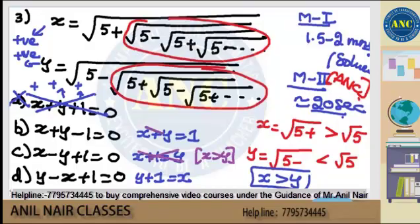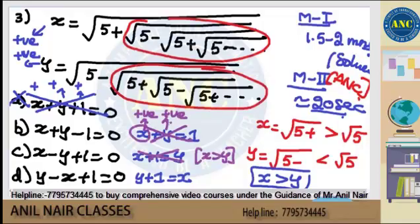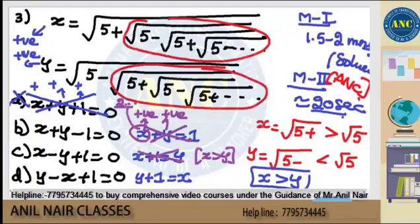Second option: x + y ≡ 1. x is positive, y is positive, and x is greater than √5 which is greater than 2 — so x is greater than 2. Greater than 2 plus a positive value — how can it be equal to 1? Second option is also eliminated. Did I use any equation? Just by looking at the question, you are getting the answer.